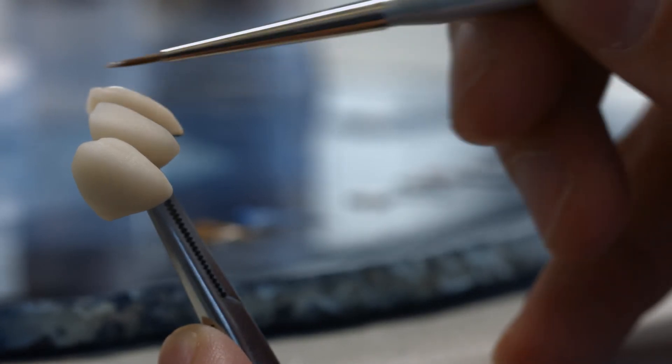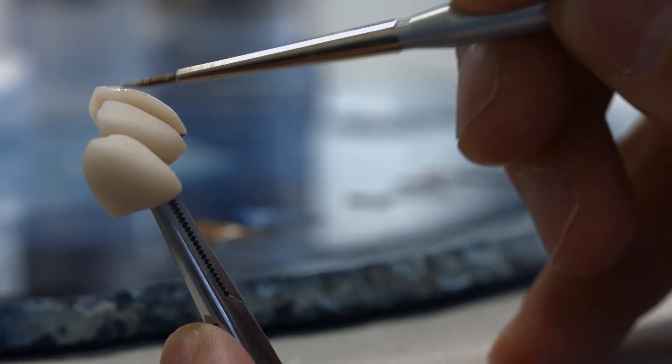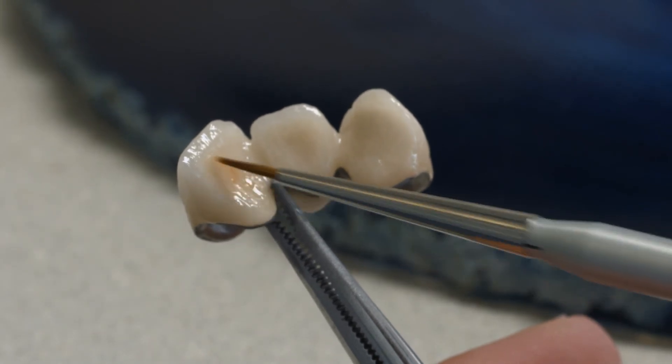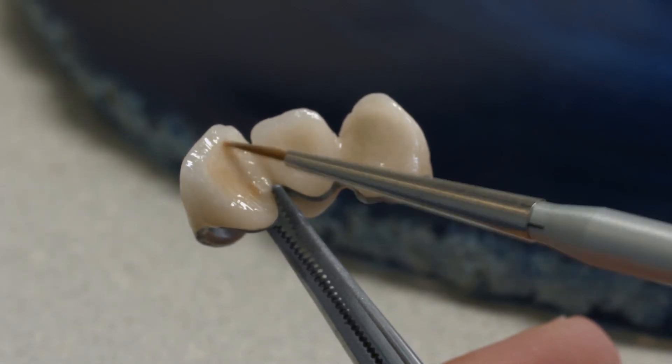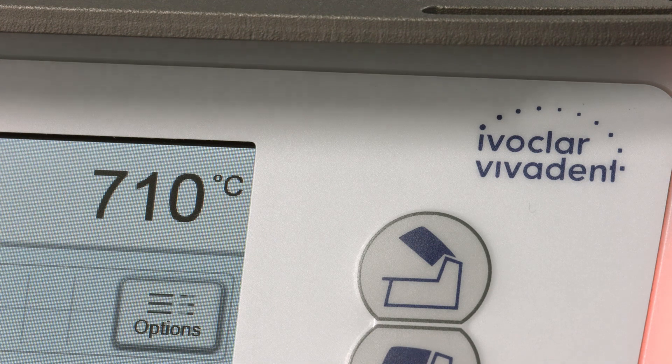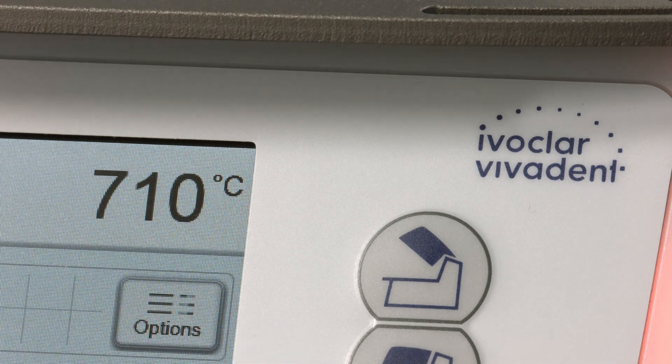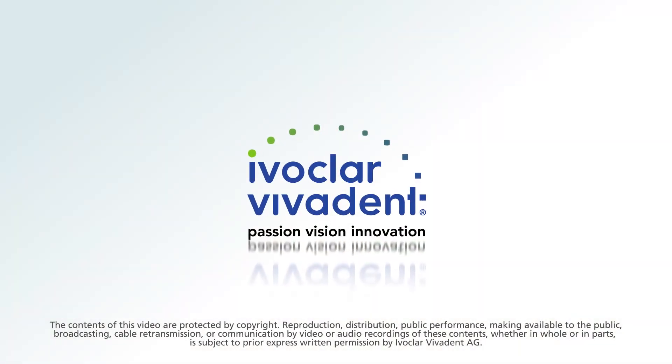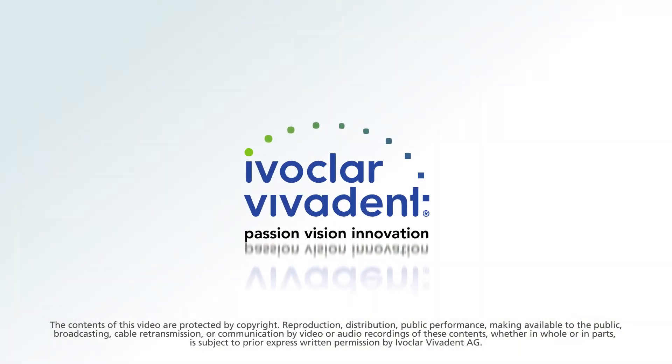Use a brush to apply the glaze on the entire veneering surface. If needed, shade adjustments can be made on the applied glaze. Observe the given firing parameters to fire the glaze.